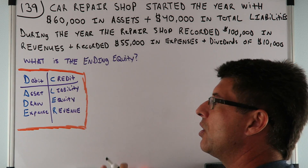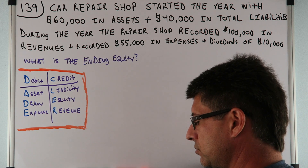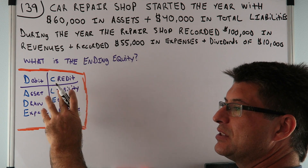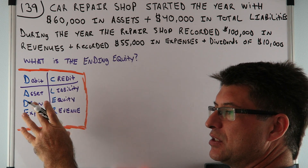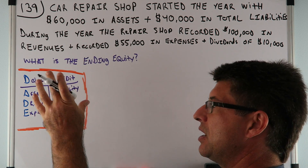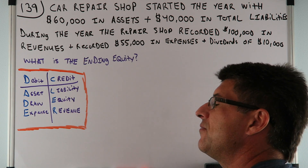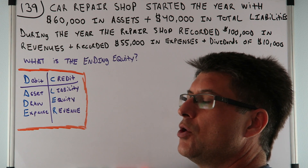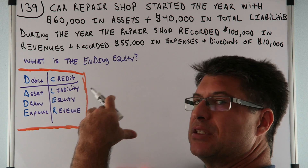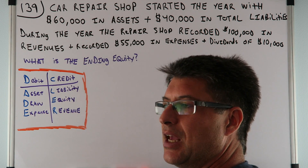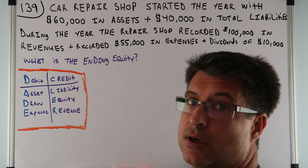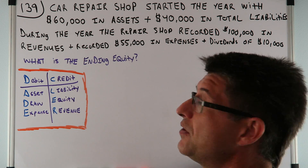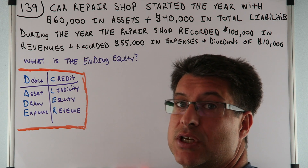As you know, debits are on the left and credits on the right in normal balances. If you've watched my previous videos, you know it contains the balance sheet, it contains the income statement, it contains where the dividends are — it's negative equity. So we're going to see that play in. We're going to use all of those in this problem.